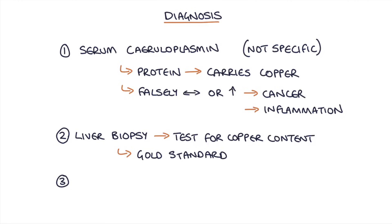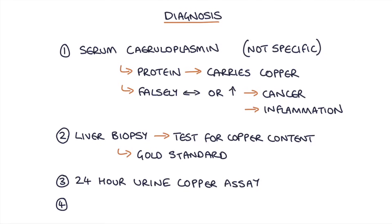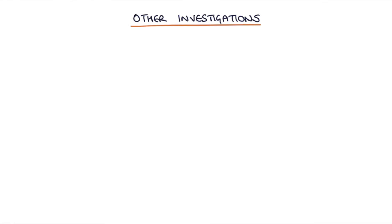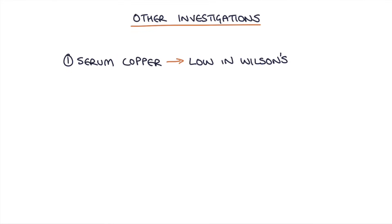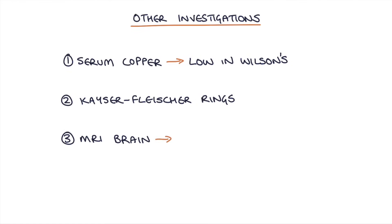You can also make a diagnosis based on the 24-hour urine copper assay — measuring how much copper is in the urine over a 24-hour period — though this is quite cumbersome as you have to continuously collect urine samples for a full 24 hours. Alternatively, there are scoring systems that take into account various features and laboratory test results. Other investigations include checking serum copper, which is usually low in Wilson's disease, looking for Kayser-Fleischer rings, and doing an MRI brain, which can show non-specific changes indicating Wilson's disease.